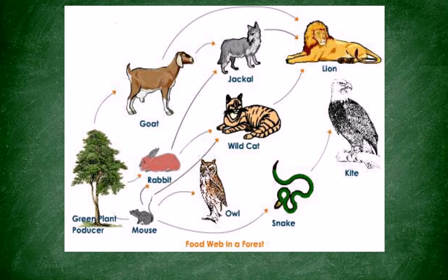First of all, we've got the producer, which is this tree. Then we've got the primary consumers, such as the mouse, the rabbit, and the goat. There are four secondary consumers: the snake, the owl, the wildcat, and the jackal. And finally, we've got two tertiary consumers, the lion and the eagle.